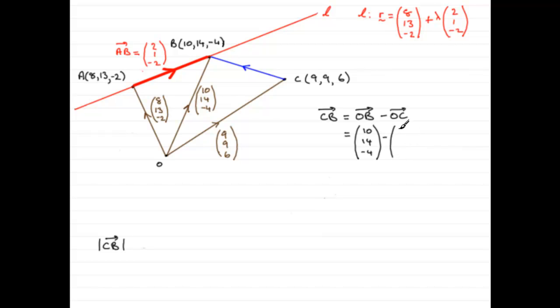So just bear with me on this one. We've got 9, 9, 6. Take those two away, and what you should get is 1, 5, minus 10. So we've got our vector C to B.